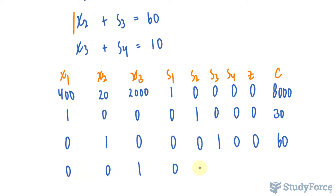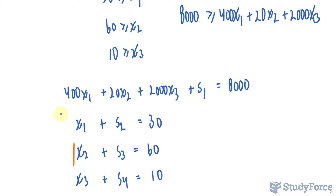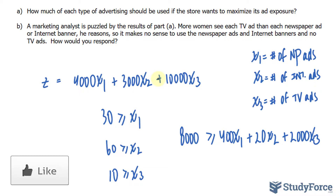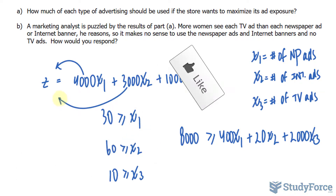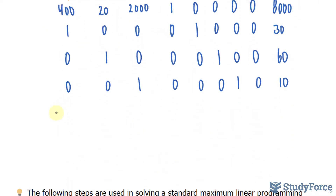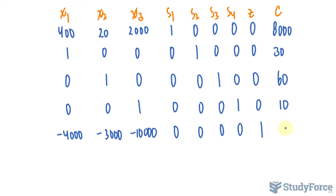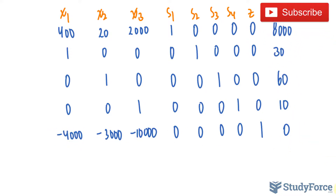For the TV constraint: 0, 0, 1, 0, 0, 0, 1, 0, and 10. For the objective function row, bring the three variable terms over to the left side of Z, making them negative: negative 4,000 for X sub 1, negative 3,000 for X sub 2, negative 10,000 for X sub 3, zeros for the slack variables, 1 for Z, and no constant. I'll separate the objective function from the constraints with lines. Be as neat as possible — when I did this by hand it took five pages to complete.